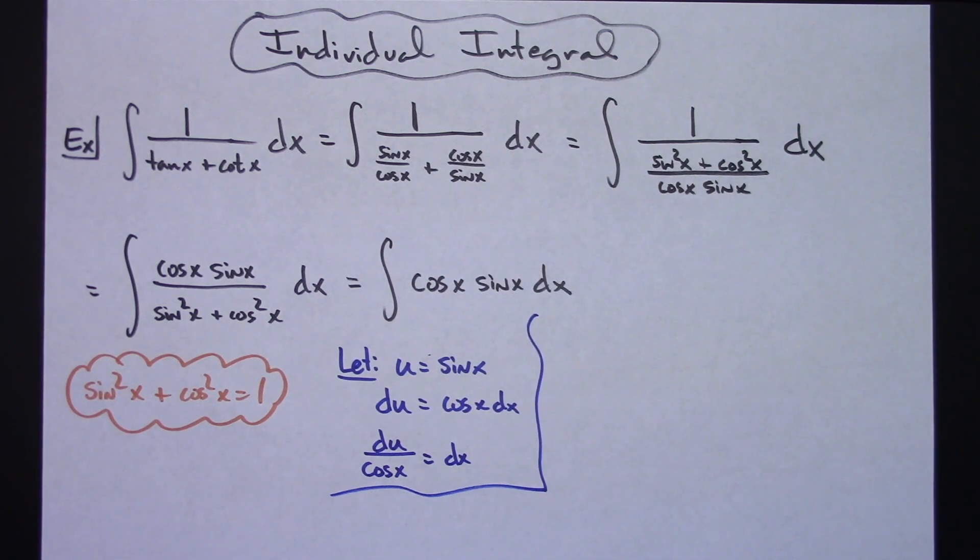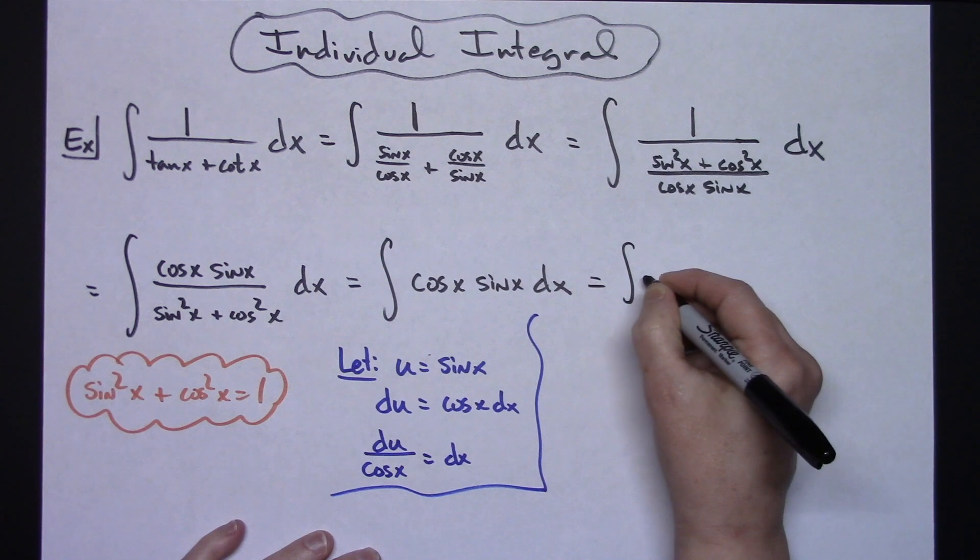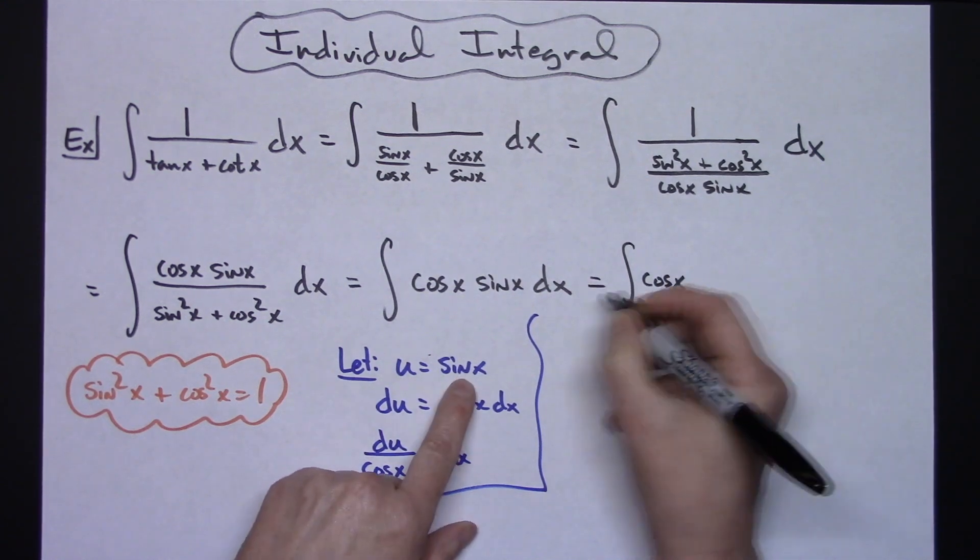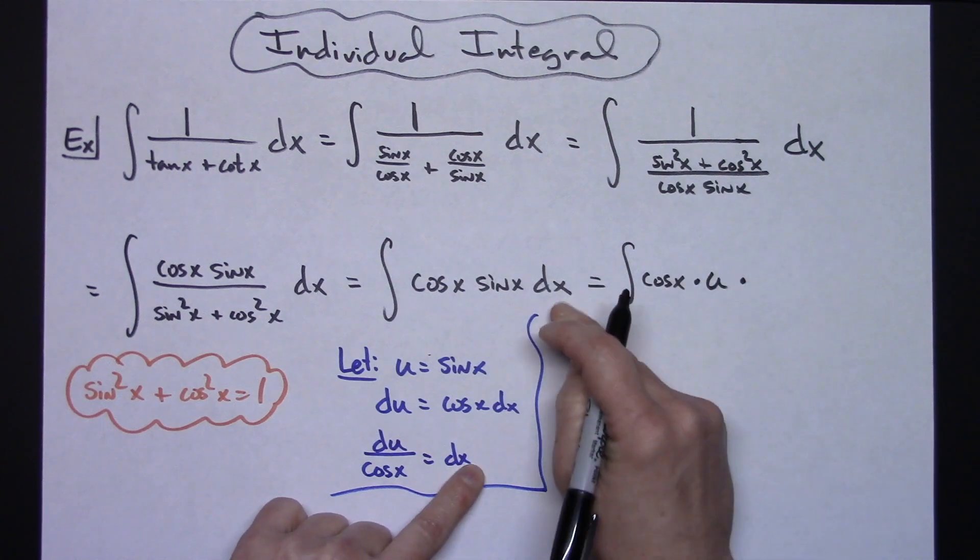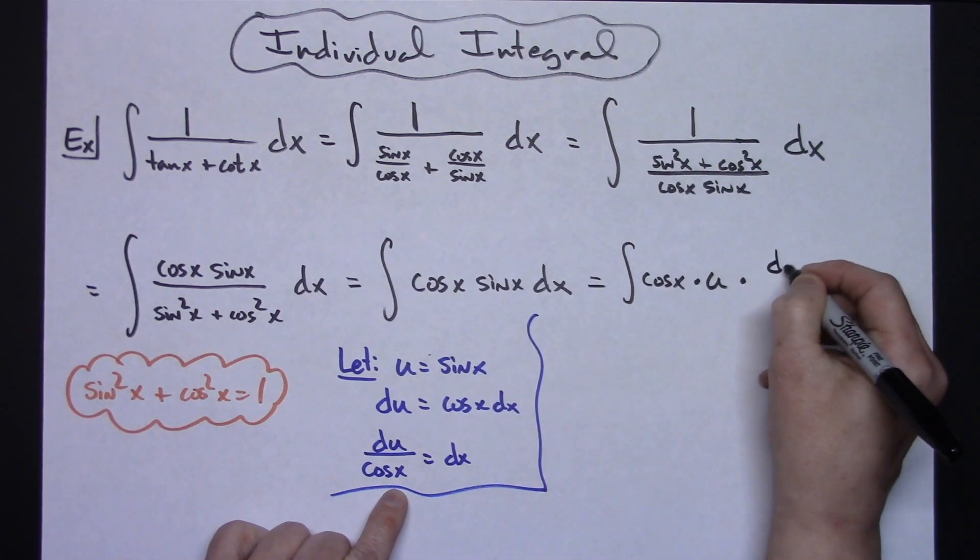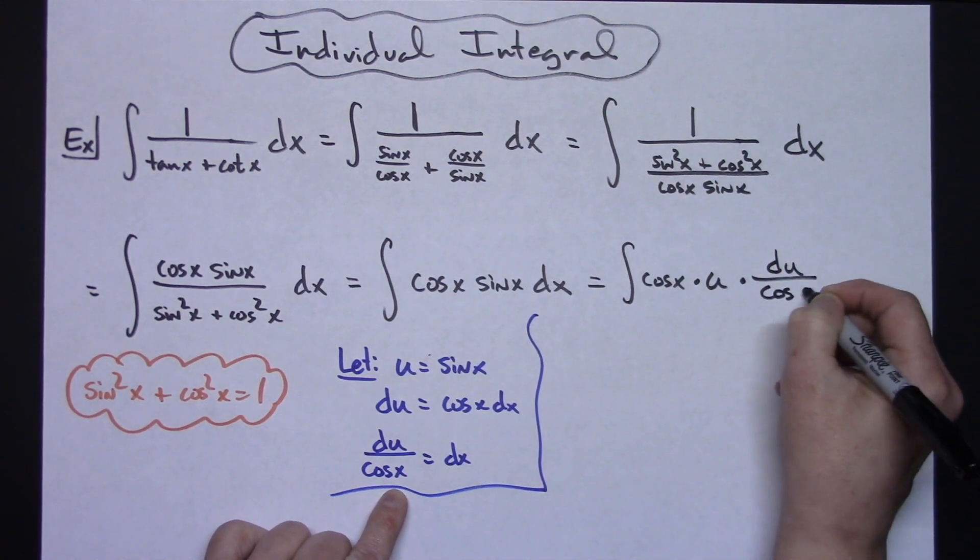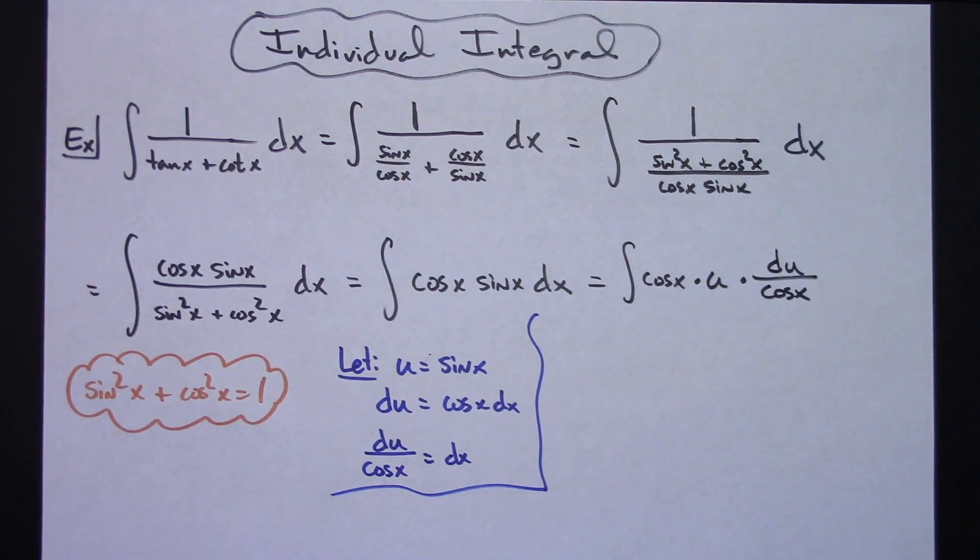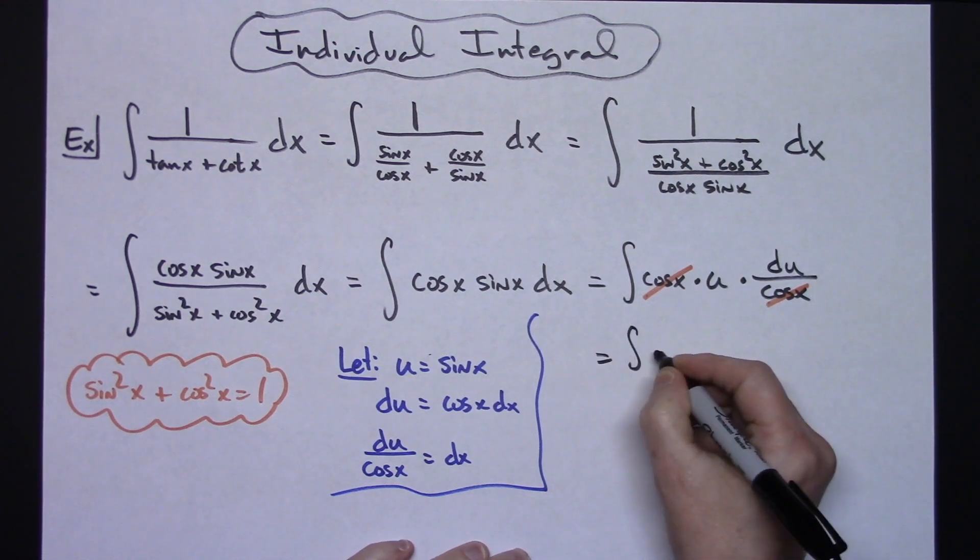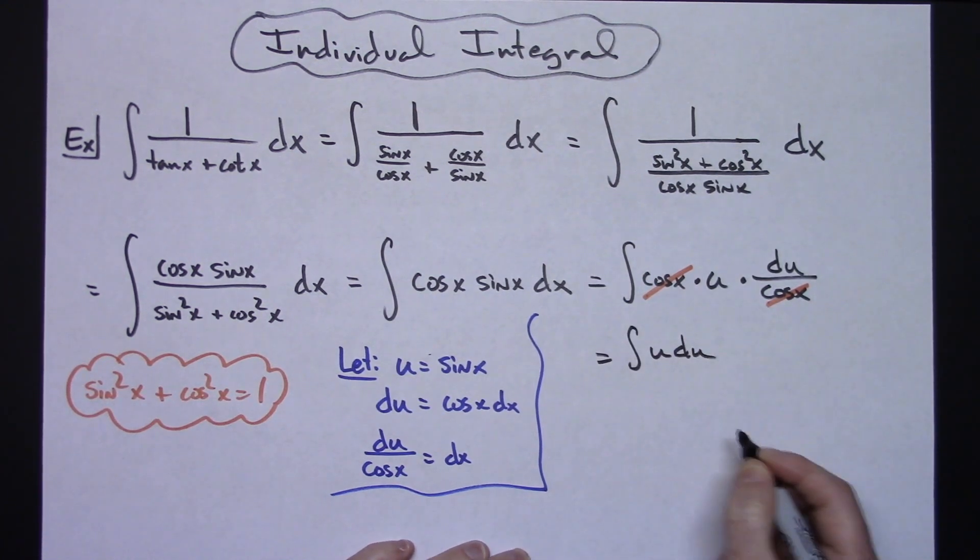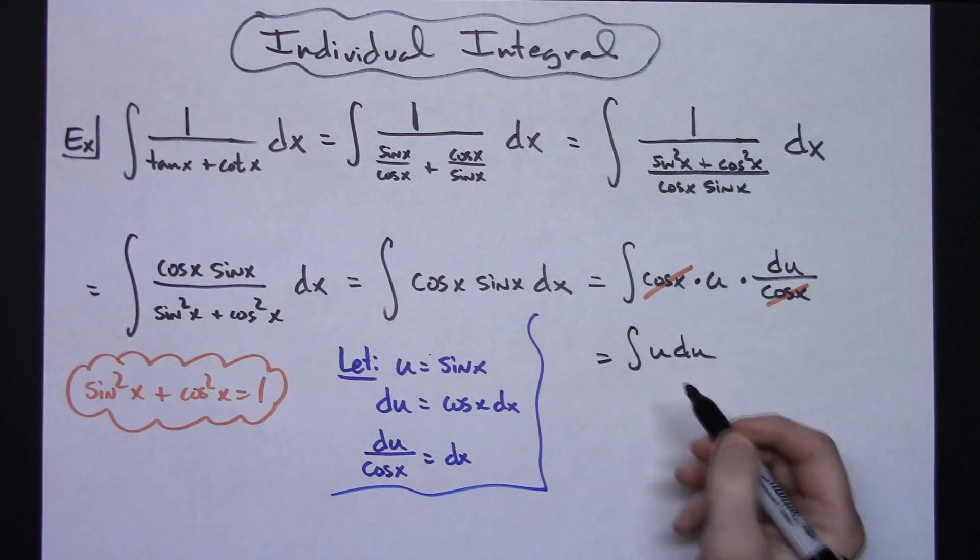Okay so from there we will replace, we'll keep our cosine x, we'll replace sine with u and we will replace the dx with du over cosine x. That's going to allow the cosine x's to cross out and then we're going to have just a nice little integral of u du and that just integrates extremely easy.